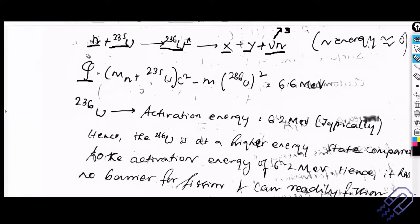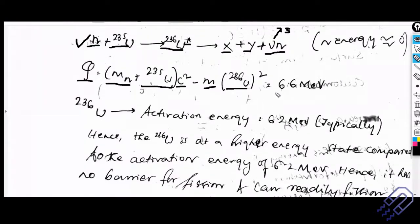Let's find the Q-value for this reaction. The Q-value is: [mass of neutron + mass of U-235] × c² minus the product mass of uranium-236. If you do the calculation, you get approximately 6.6 MeV. That means the uranium-236 we are talking about has this much energy available.